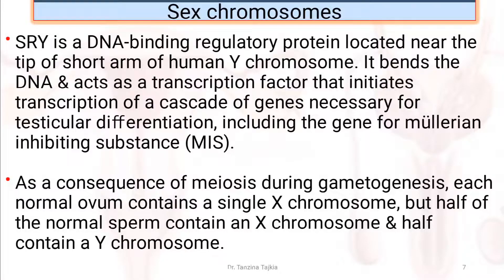SRY bends the DNA and acts as a transcription factor that initiates transcription of a cascade of genes necessary for testicular differentiation, including the gene for Müllerian inhibiting substance, which is called MIS.